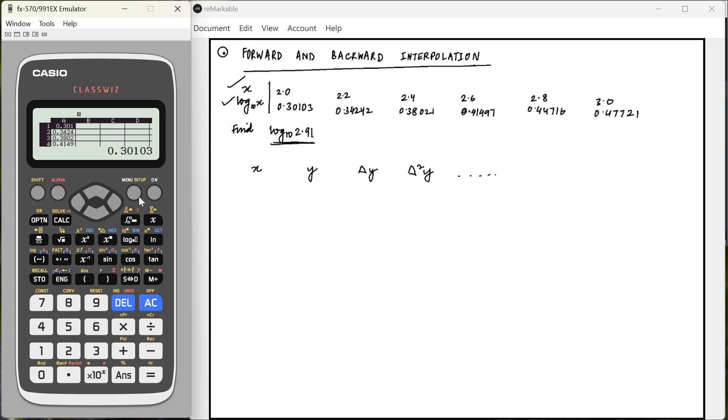So to calculate the first forward difference or backward difference, whatever you call it, in column B, we are going to go to option fill formula and the formula is going to be A2 minus A1. That's how we calculate the differences, right? So the second entry of the first column minus the first entry of the first column. And I'm going to fill this formula from B1 to B5 because I know that there are going to be five entries in the second column. And I've got the first forward difference here.